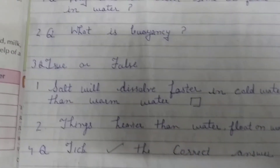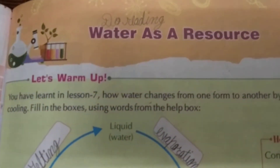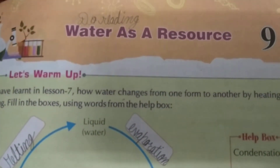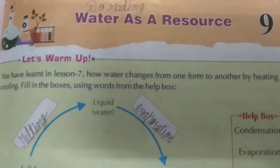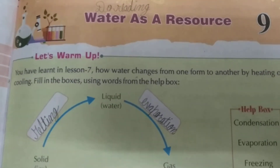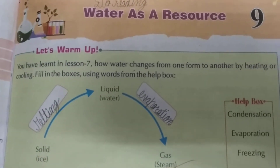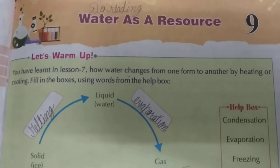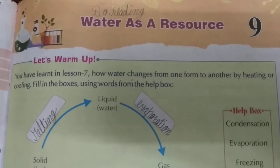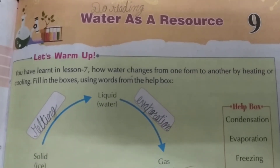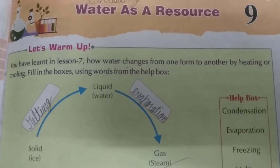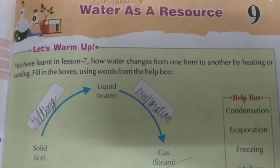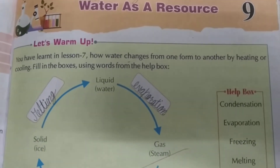Now take all your books. Now we will do a new chapter. Lesson number 9: Water as a resource. Already we have done properties of water. Why we take water? Water is used for cooking, bathing, cleaning the utensils, watering the plants etc. Now we will do water as a resource.